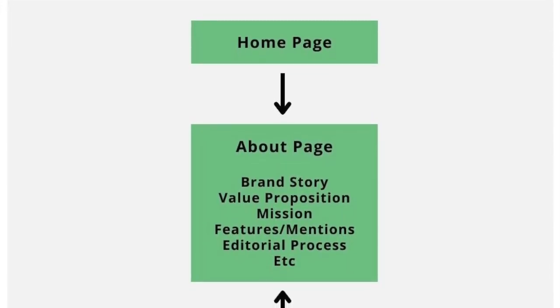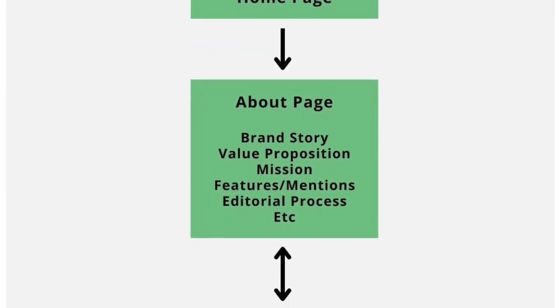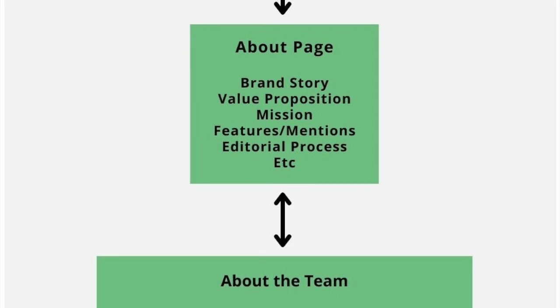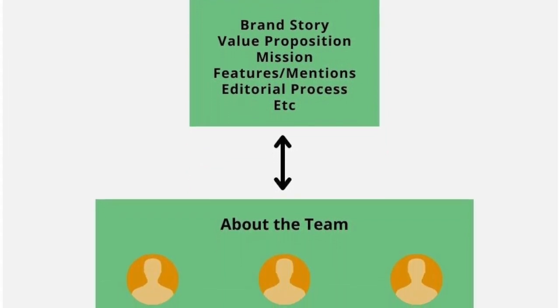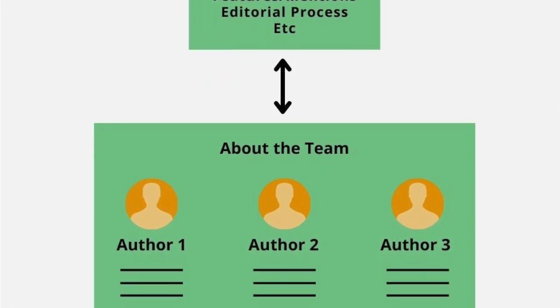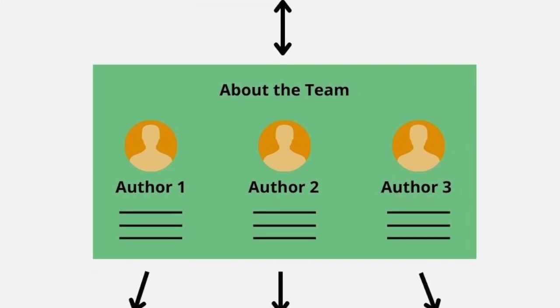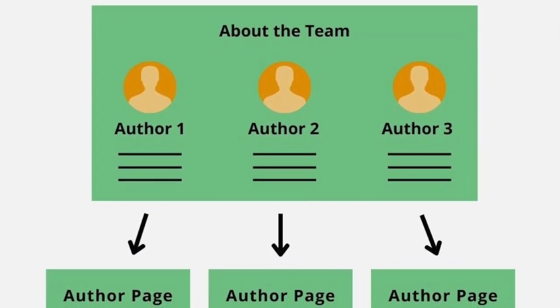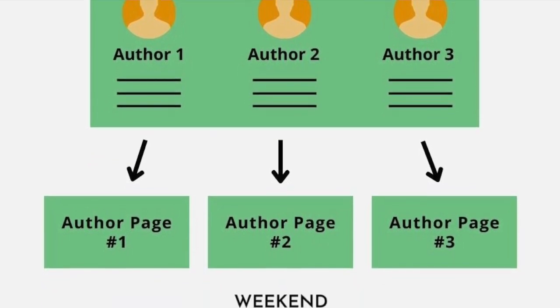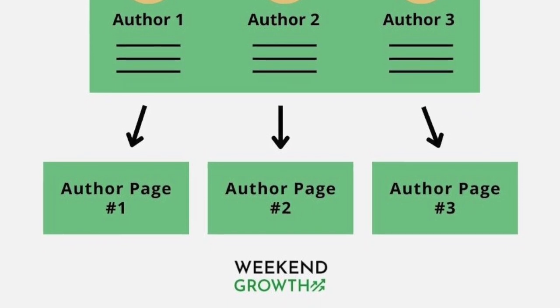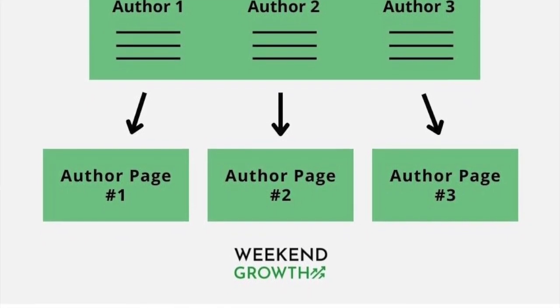Now that we've talked through having organization schema for your entire website, an about page with proper about page schema, and individual authors listed with profile page schema, it's probably time to share my preferred structure for a typical website as it relates to these topics. You can see the homepage linking somewhere to the about page, we have a fully built-out about page, and then the about page links to an about the team page. I like to have an about the team page where we feature key elements about each of the authors, and inside of each of those authors we link to their author page. With this in mind, let's talk about going even further to make sure Google can connect all the dots — and that's with same as schema.